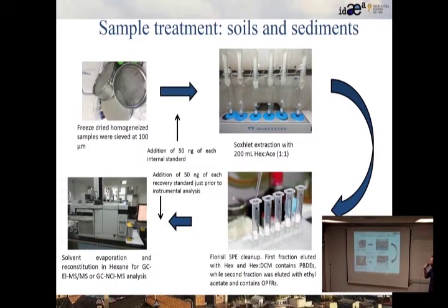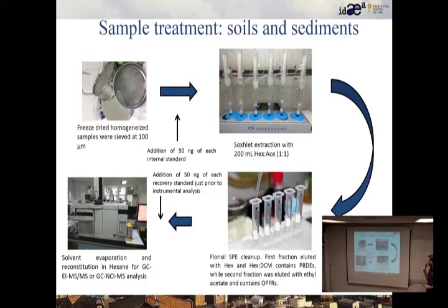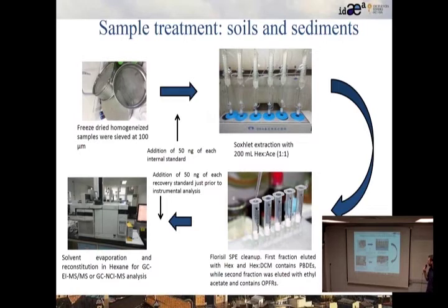The sample treatment used is standard: homogenized samples sieved at 100 micrometers, then Soxhlet extraction with organic solvents hexane and acetate, followed by a cleanup step where the two classes of pollutants are separated. The first fraction is eluted with hexane and dichloromethane, containing the non-polar pollutants. The second fraction is eluted with ethyl acetate and contains the more polar OPFRs. Known amounts of recovery standards are added, then instrumental analysis is performed by gas chromatography with tandem mass spectrometry using electron ionization for OPFRs, and negative chemical ionization with a single quadrupole for PBDEs.